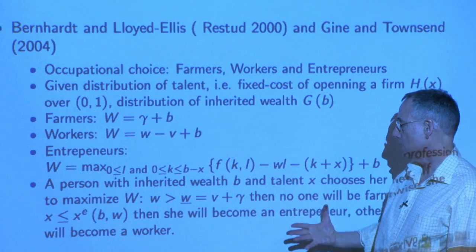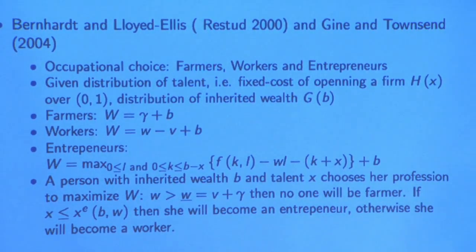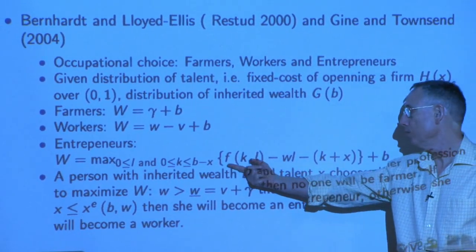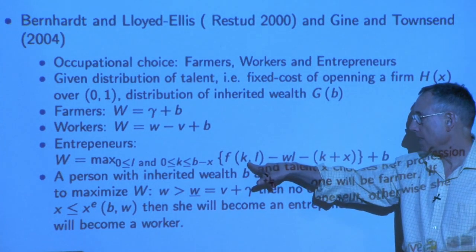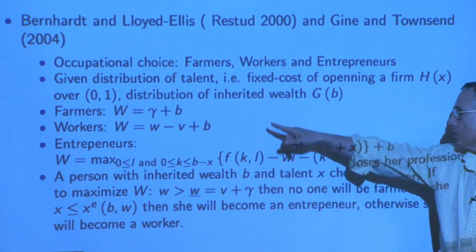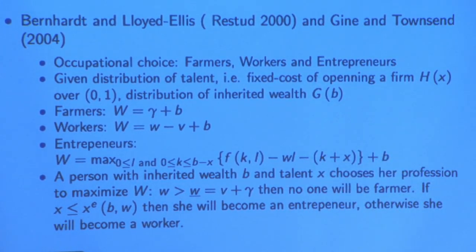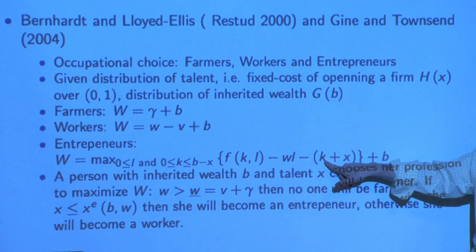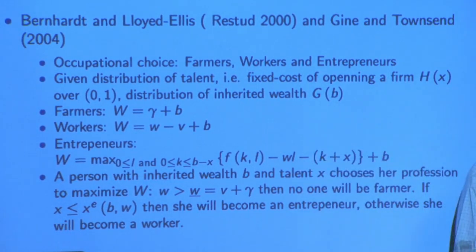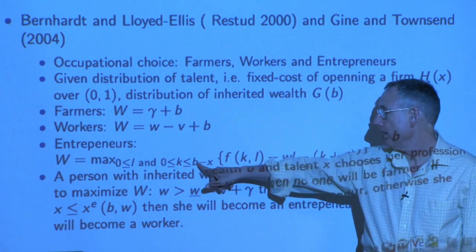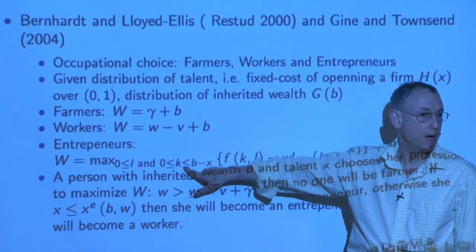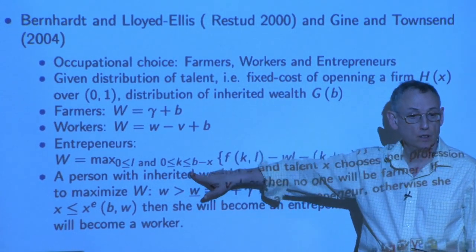Firms maximize profit. The price of output or the consumption good is normalized to one. Firms have output produced using capital and labor. Labor can be hired — those are the workers, and you pay them a wage. Capital is coming out of initial wealth; capital and consumption are kind of one to one. So you have your initial wealth, and the capital has to be financed by that — capital cannot exceed that amount.